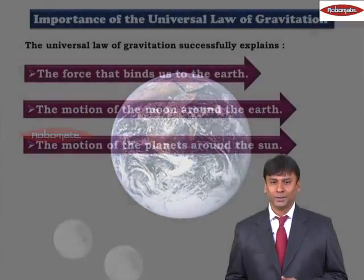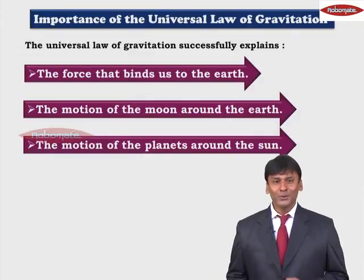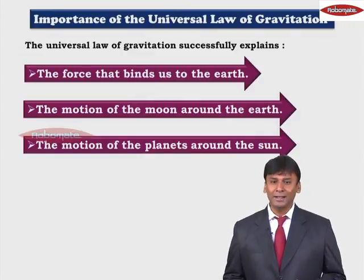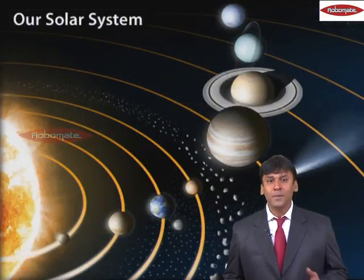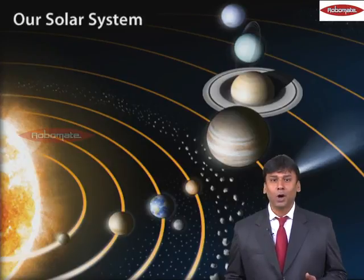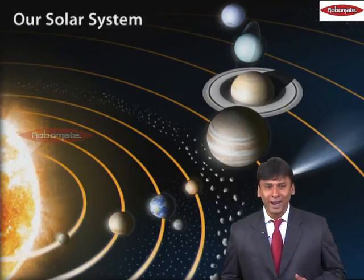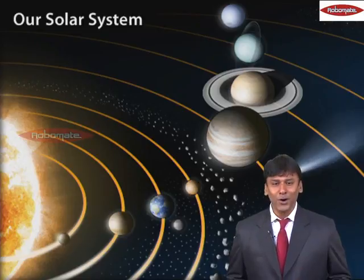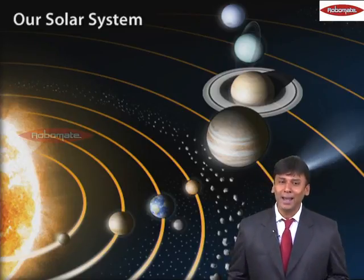Thirdly, the third thing we understand from Newton's Law of Gravitation is the motion of the planets around the sun. All the planets are rotating and revolving around the sun, and this is happening because of the law of gravitation between the sun and the planets.